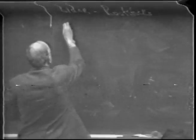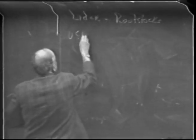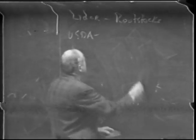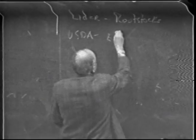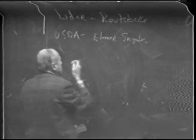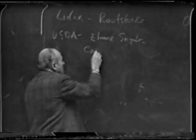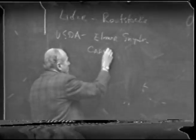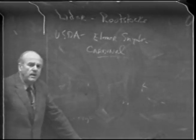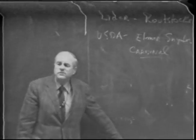The USDA has had two well-known breeders. Elmer Snyder at Fresno — his most well-known variety is Cardinal, a very well-liked variety and probably the best one there is for your backyard.